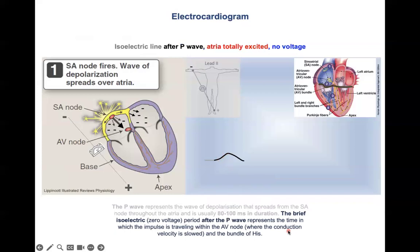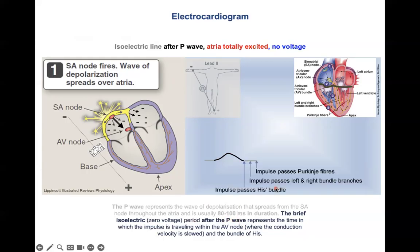After the P wave comes a brief isoelectric line — a zero potential line. At this point, the atria are fully excited, so no voltage is detectable. The signal has already arrived at the AV node, as indicated by this arrow.